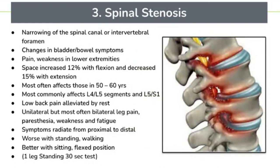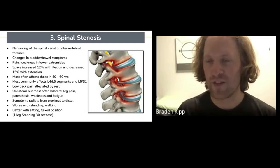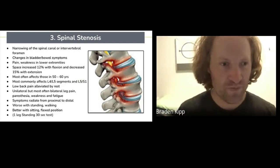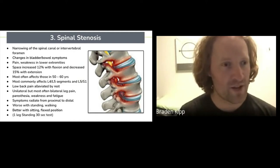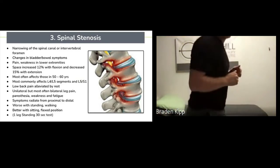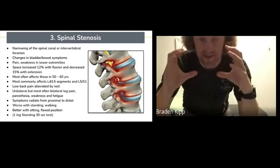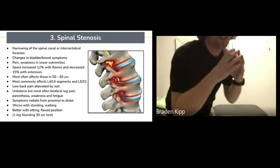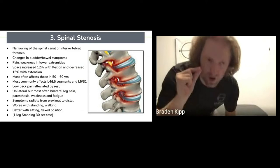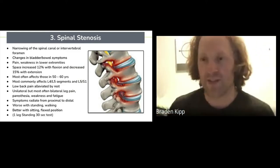Number three is spinal stenosis. What happens is there's narrowing of the spinal canal or intervertebral foramina — where that nerve root comes out, there's actually less space and it gets pinched more. My analogy is the train coming through a tunnel: the tunnel is nice and wide and the train makes it through easily, but if the tunnel is squeezed down, the train gets stuck. You might have changes in bladder and bowel symptoms, and pain and weakness in your lower extremities. The dead giveaway is that bending forward into a flexed position creates space and opens up that area for the nerve to breathe, while extended positions pinch down and create less space, making it worse.